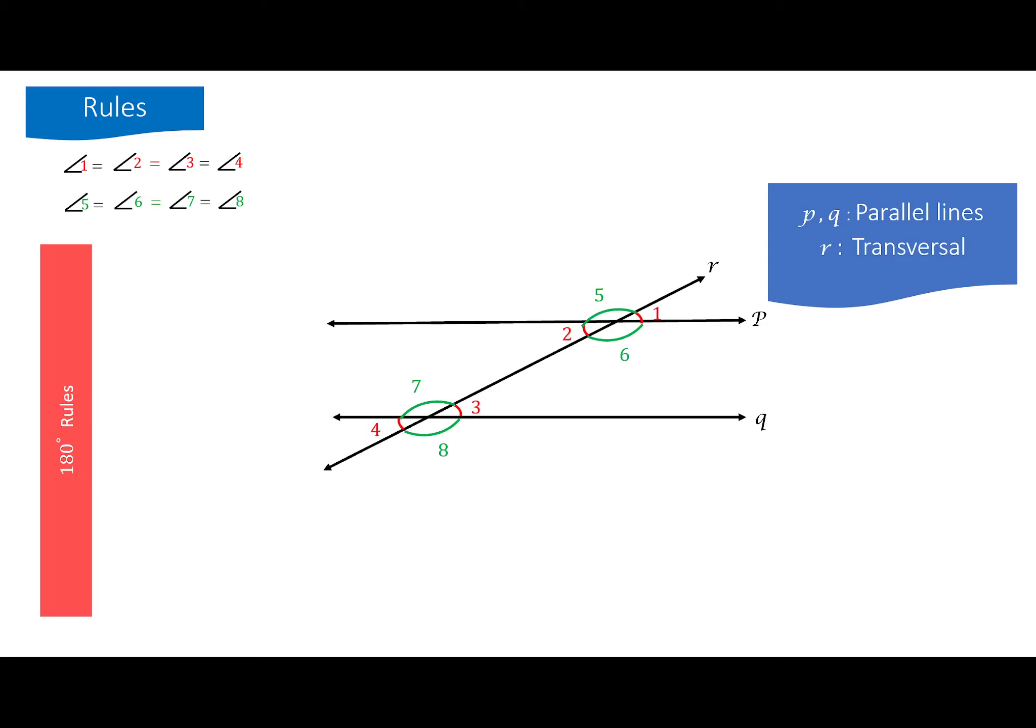Now, here are what I call 180 degree rules. Remember that number is going to appear quite a bit here. So if I add one and five, that's a straight line, I get 180. One and six, same thing. Two and five, straight line. Two and six, straight line. Three and seven. Three and eight. Four and seven. Four and eight. Now, in addition to this, if I add two and seven, I get also 180 degrees. If I add three and six, I get also 180 degrees.